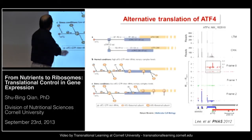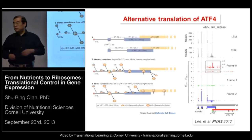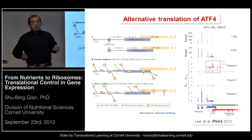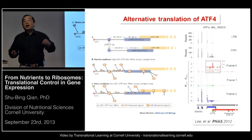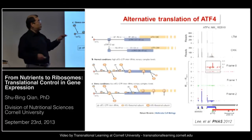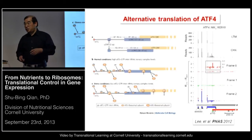Cells often use alternative translation as an effective means to deal with stress. The best-known example is ATF4, which has multiple upstream open reading frames and is upregulated when the cell is under starvation because one upstream open reading frame overlaps with the main coding region — a feature nicely captured by our GTI-seq approach. We can find many transcripts with alternative translation initiation sites, but the key question is how to figure out their functional significance, like that of ATF4. In the next few minutes, I'm going to share a fascinating story about how alternative translation initiation can lead to a very unexpected translational control.